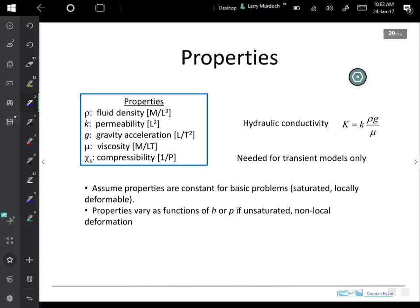The permeability and the hydraulic conductivity are related like this. This is permeability little k and this is hydraulic conductivity. So you have the ability to specify one or the other and you also need to have the fluid properties, the density and the dynamic viscosity, to translate between them.